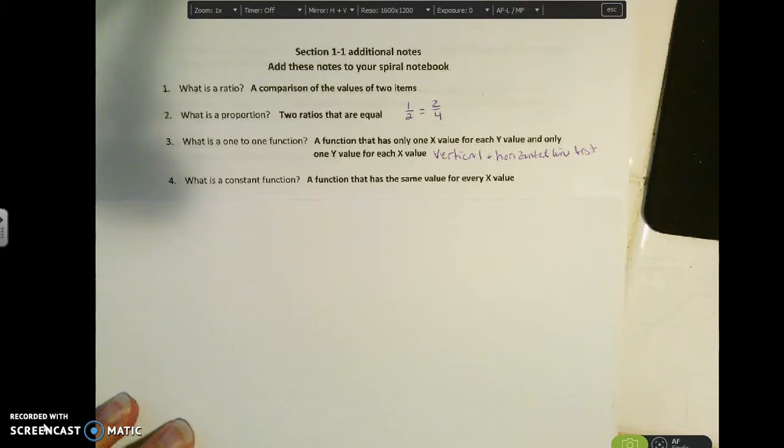So then we have a constant function. A constant function is a function that has the same value, same y value for every x value. So if I were to graph it, it would basically be just a horizontal line.